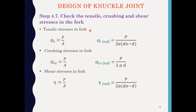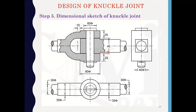Similarly, we find the induced tensile, crushing, and shear stresses in the double eye or fork. Here 2 is multiplied for the double eye and A is the thickness of the fork ends. The induced stresses should be less than permissible stresses. This is the final step — after finding the various dimensions, we draw 3 views of the knuckle joint: the sectional front view, the top view, and the side view. In this way we have designed the knuckle joint.